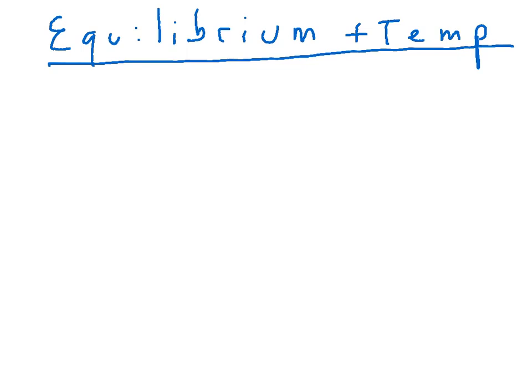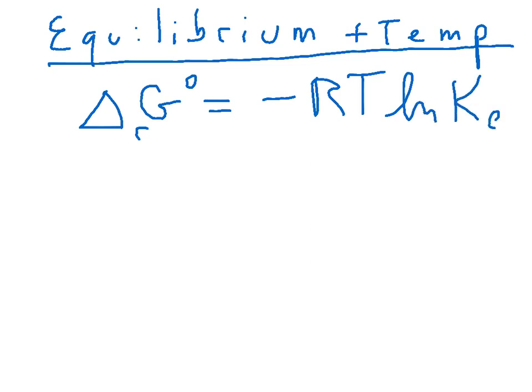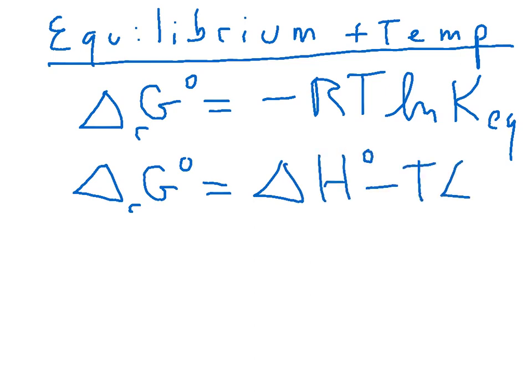And we can figure out how this works by writing down the equation we talked about last time, which is that the standard Gibbs energy, delta G standard, is negative RT times the log of K equilibrium. And remembering that we could break down delta G standard into two pieces, delta H standard minus T delta S standard.